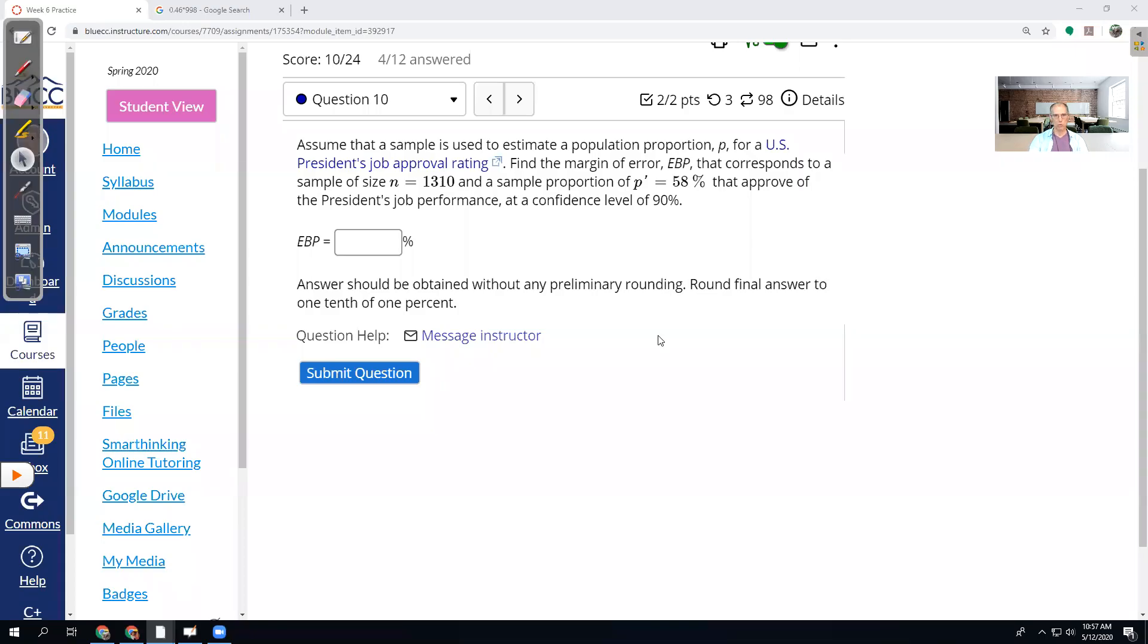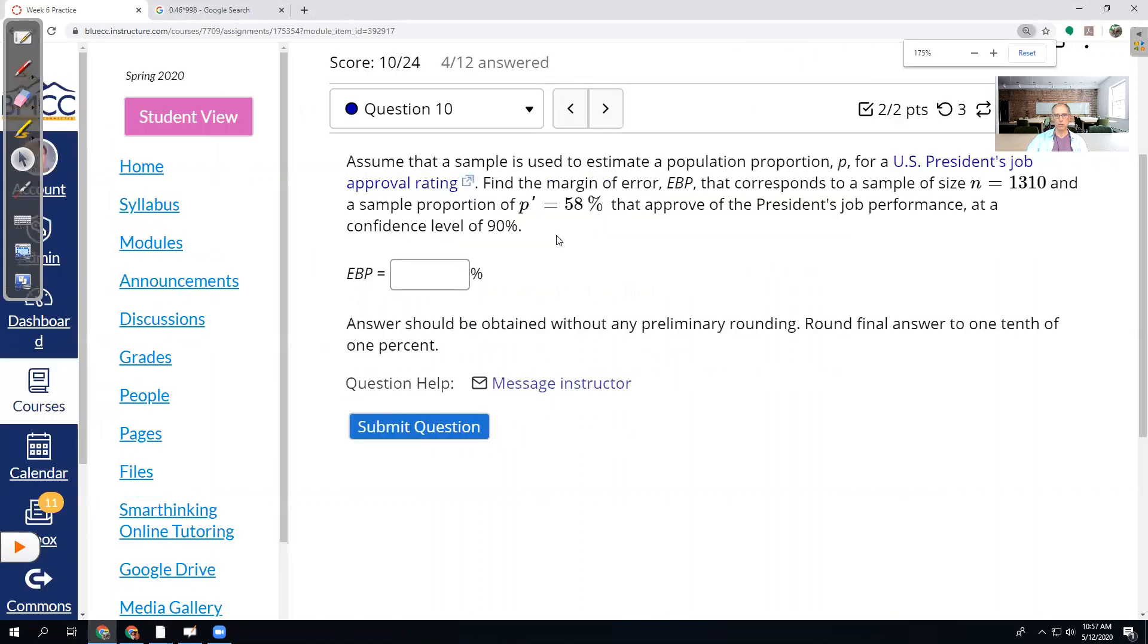This one is about presidential approval ratings. We're assuming that a good sample is used to estimate the US president's job approval rating, and there's a link to some information on that if you want to check out more. We want to calculate the margin of error, and EBP stands for error bound on the proportion. We have a sample size of 1,310 people who were asked what their approval is for the president's job, and 58% of people said they approve. That's what the p' represents here. We want to use that to calculate the margin of error.